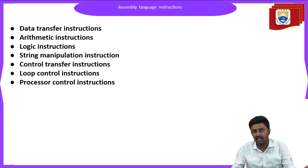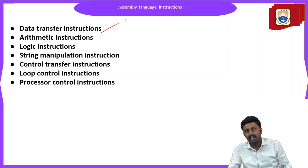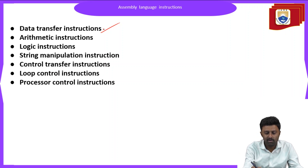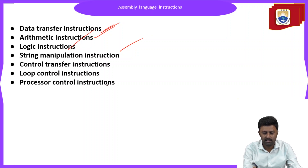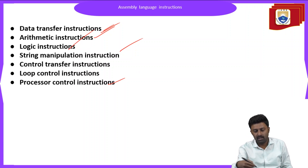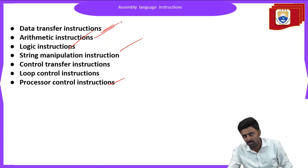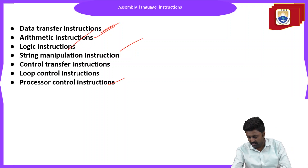After learning what an instruction is, their operand sizes, we will now see the different types of assembly language instructions available. The list includes: data transfer instructions, arithmetic instructions, logical instructions, string manipulation instructions, control transfer instructions, loop control instructions, and processor control instructions. For an assembly language, we support all these types of instructions, where data transfer instructions are responsible for performing data transfer operations like MOV.